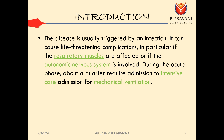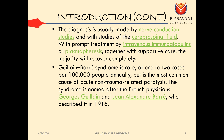The disease is usually triggered by an infection. It can cause life-threatening complications, particularly if the respiratory muscles are affected or if the autonomic nervous system is involved. During the acute phase, about a quarter of patients require admission to intensive care for mechanical ventilation. Diagnosis is usually made by nerve conduction studies and examination of cerebrospinal fluid, with prompt treatment by intravenous immunoglobulin or plasmapheresis together with supportive care. The majority will recover completely.